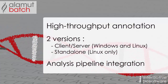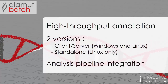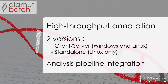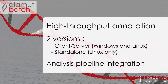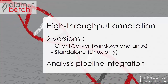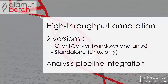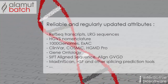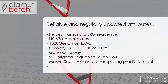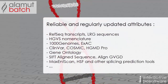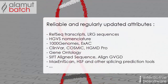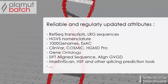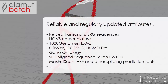Alamut Batch is a high-throughput gene-based variant annotation application for next-generation sequencing analysis, ranging from gene panels to exomes. Designed for clinical and research laboratories, Alamut Batch enriches raw variants with a wealth of reliable and regularly updated attributes.